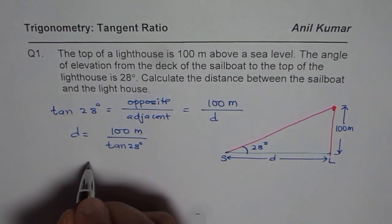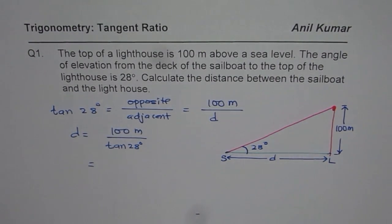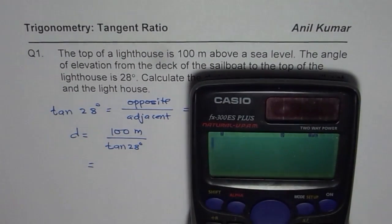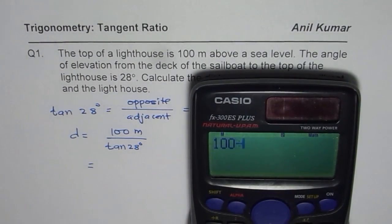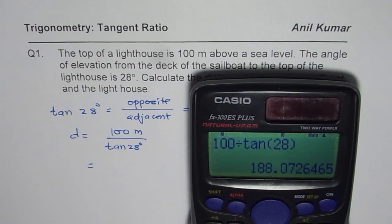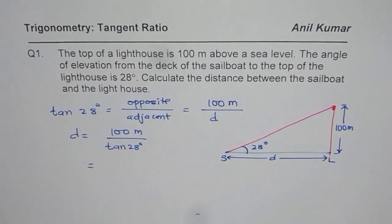So at this stage, we can use the calculator. And then say 100 divided by tan of 28 degrees equals to. So it gives 188.07.